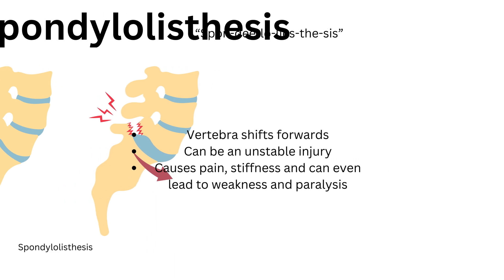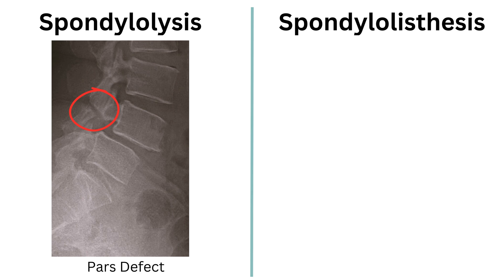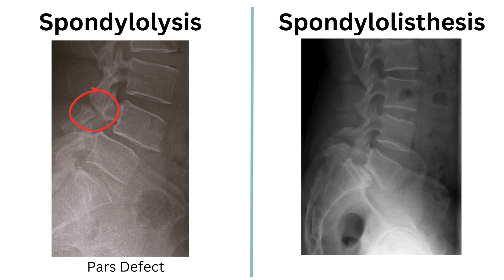Let's take a look at some radiographic examples of both of these processes. On the left we have an image of spondylolysis where we can see a fracture of the L4 pars interarticularis. On the right hand side we can see an example of spondylolisthesis whereby the L5 vertebra has shifted forward out of alignment. We can see this by measuring up the alignment with the sacral bone underneath it.